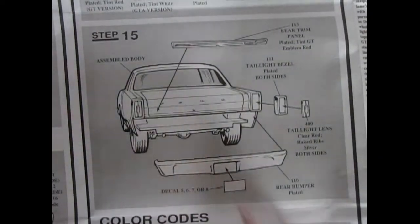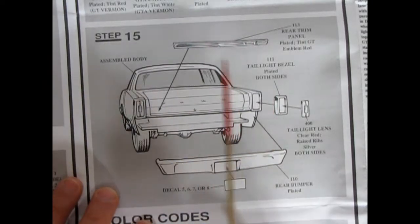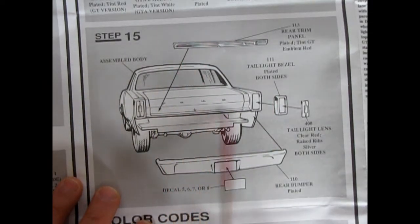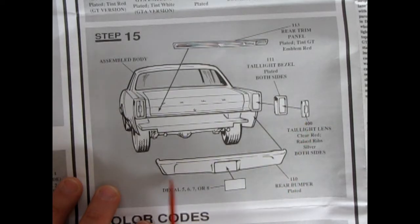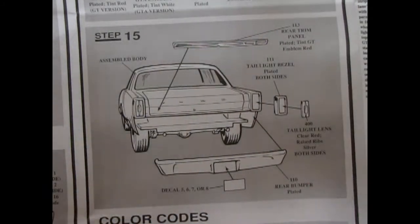Step 15. Shows us the back. With our rear panel trim. Gluing across the trunk lid. And then tail light bezel. And the tail lights. As well as the bumper. And of course we get a choice of four different license plates. And finally.